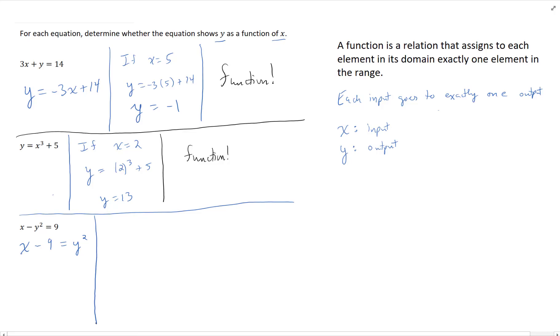Notice we have y² here, and y² = x - 9. This one's a little different. If we choose a value for x, we still need to do some work to figure out y.